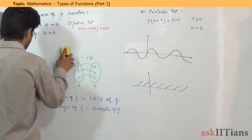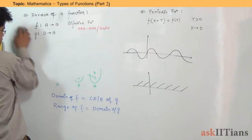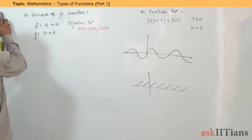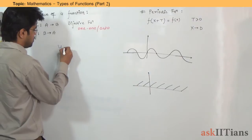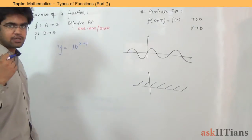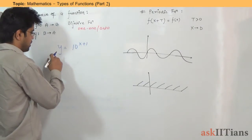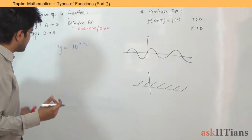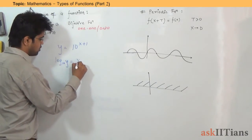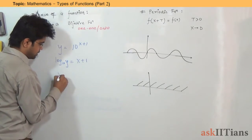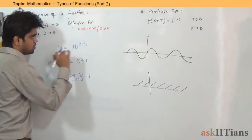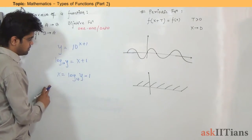Let's take an example and find the inverse of a function. Suppose we have y = 10^(x+1). What is desired is that we need to find x in terms of y. Taking the antilog: log₁₀y = x + 1, so x = log₁₀y − 1. This is an exponential function, and this is the way of finding the inverse.